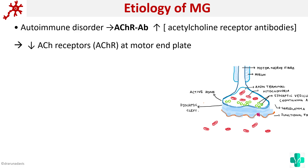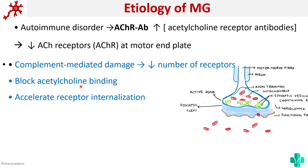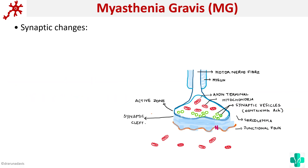So what do these antibodies do? First of all, they cause complement-mediated damage and thereby decrease the number of receptors. Not only that, they block acetylcholine binding — they won't allow acetylcholine to bind to the receptor — and they accelerate receptor internalization. They hide off all the acetylcholine receptors so that even if acetylcholine is released, it cannot bind onto the receptor. Because of this antibody-mediated damage, there would be some synaptic changes.